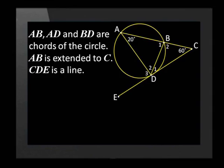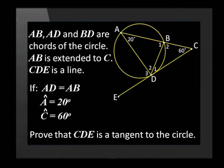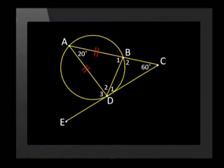Let's do an example of how we would prove a line is a tangent. AB, AD, and BD are chords of the circle. AB is extended to C. CDE is a line. If AD equals AB, angle A is equal to 20 degrees, and angle C is equal to 60 degrees, prove that CDE is a tangent to the circle. Let's start by marking the equal sides of the triangle. Did you notice that this is an isosceles triangle? We can easily calculate the size of the two base angles. Let's continue.